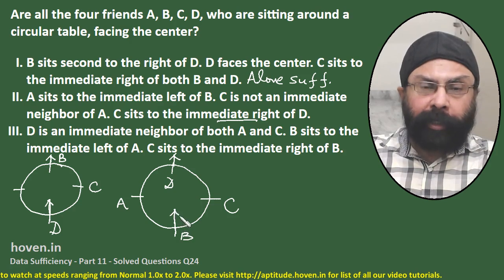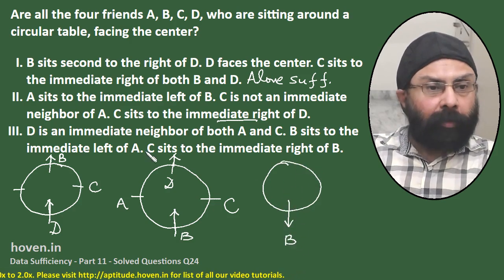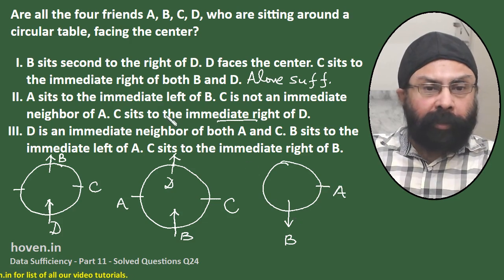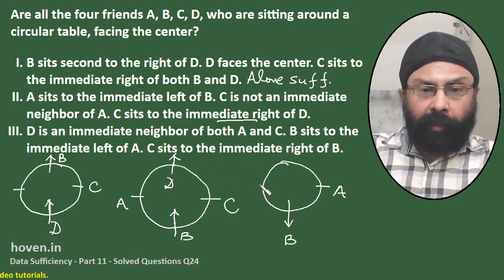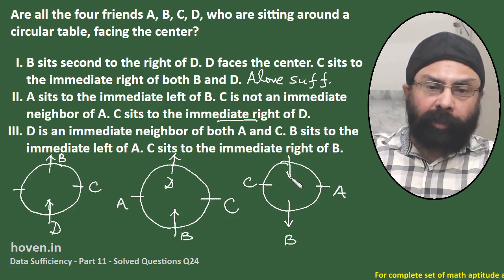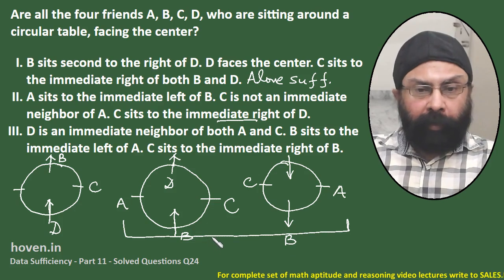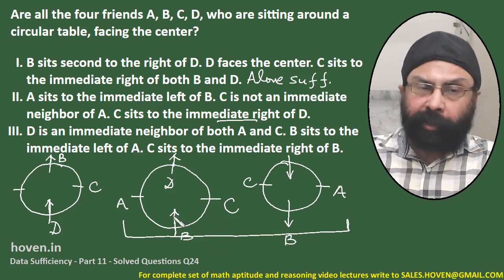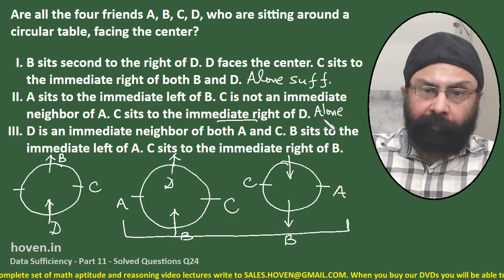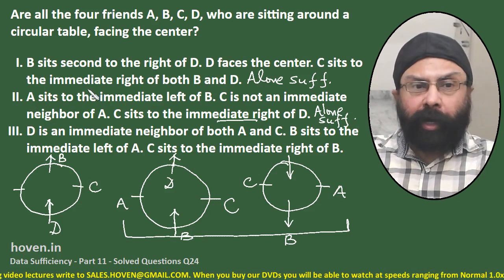Now let us see what happens if B faces outside. A sits to the immediate left of B, so A comes at the corresponding position. C is not an immediate neighbor of A, so C must be at the opposite position. C sits to the immediate right of D, which means D must be facing inside. In both sub-cases, B and D face in opposite directions, so Statement 2 alone is also sufficient to deduce that all four friends are not facing the center.